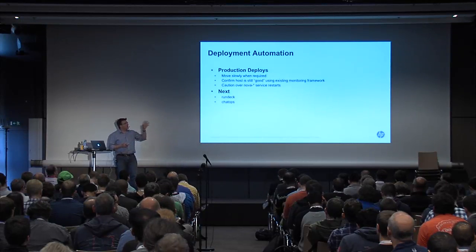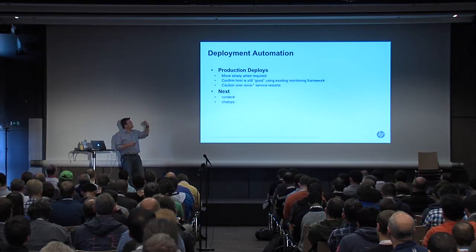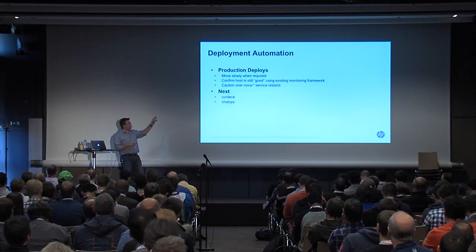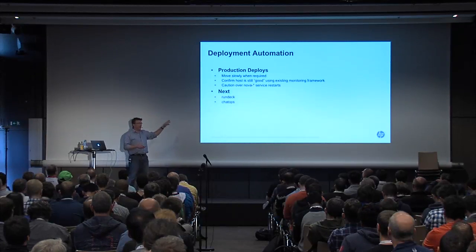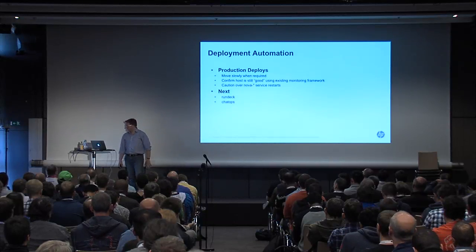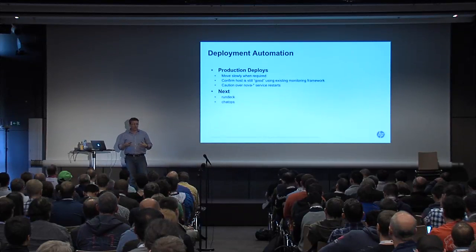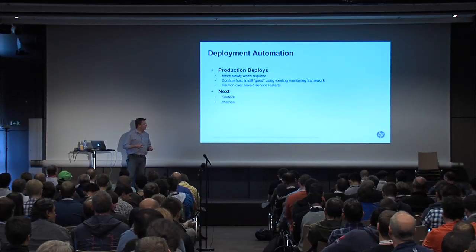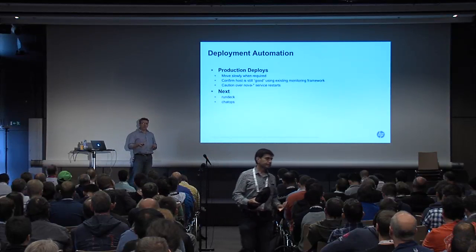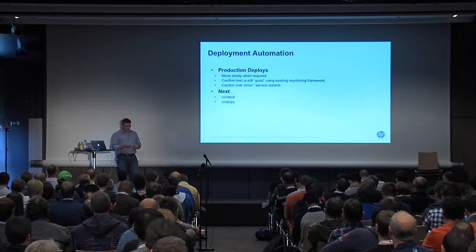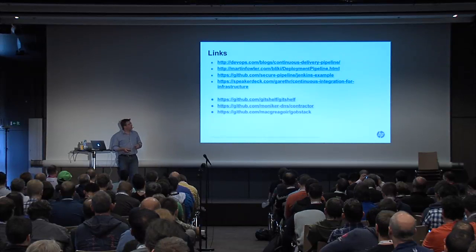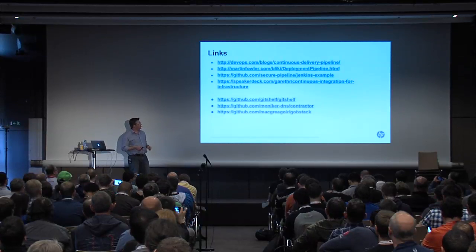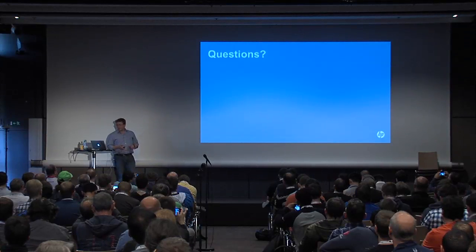Our next steps: we're about 60% of the way to getting that fully hands-free. Once we're completely hands-free for deployments, I want to have it hooked in behind Rundeck, and optionally Rundeck then hooked up to Hubot or some other ChatOps tool that allows us to do deployments from a communal location. Everybody can see what's happening, everybody can see how the deployment happens, and we have perfect time-keeping for when a deployment happens for incident management. There are some links for some of the tools we've used and some background reading. Contractor and Git Shelf are some of the tools we're using.